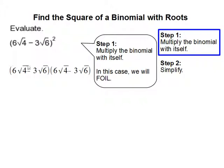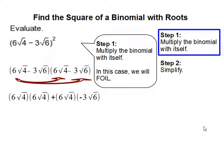To FOIL, you multiply the first term 6 root 4 times 6 root 4. Then you multiply the outer terms 6 root 4 times negative 3 root 6. Then you multiply the inner term negative 3 root 6 times 6 root 4. Then the last term negative 3 root 6 times negative 3 root 6.